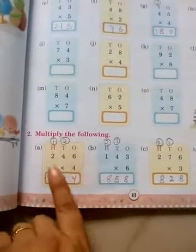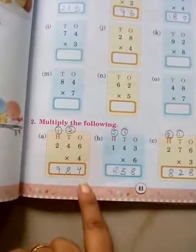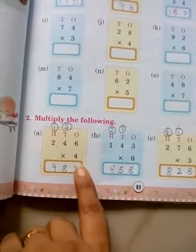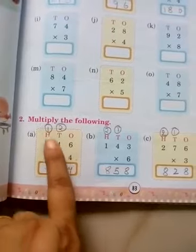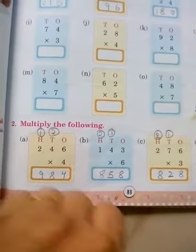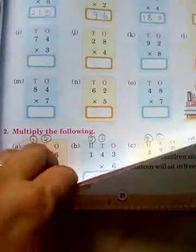In this way we do it. Next is three digit. Four, six, two - twenty-four, so four here and two carry forward. Four, four is sixteen and two is eighteen, so eight over there and one carry forward. Two, four is eight and one is nine. Okay, all this will be done.